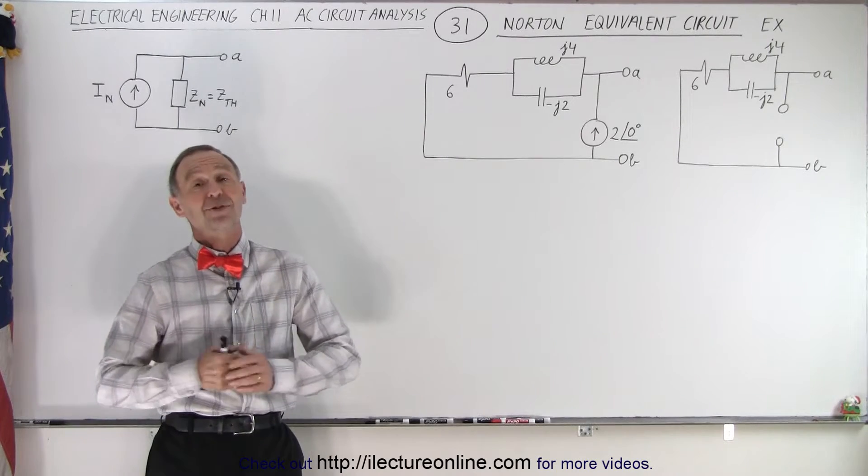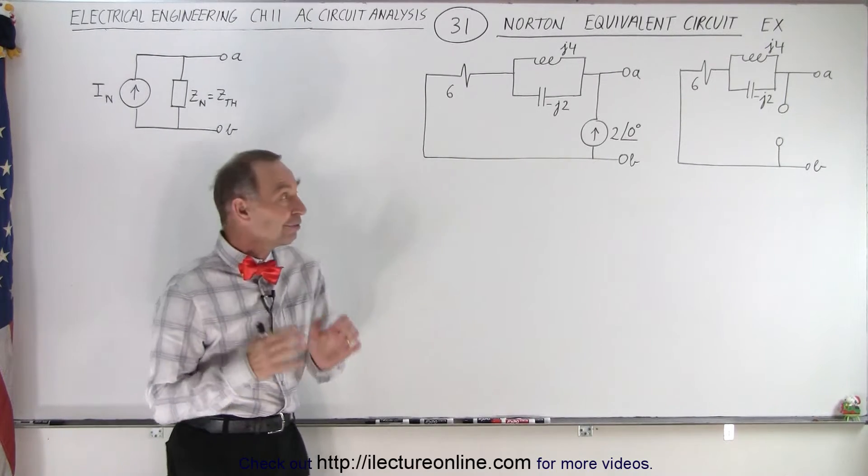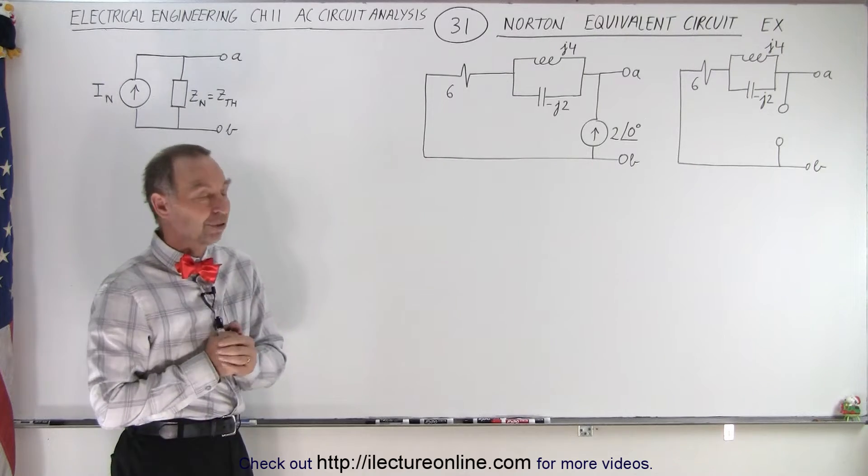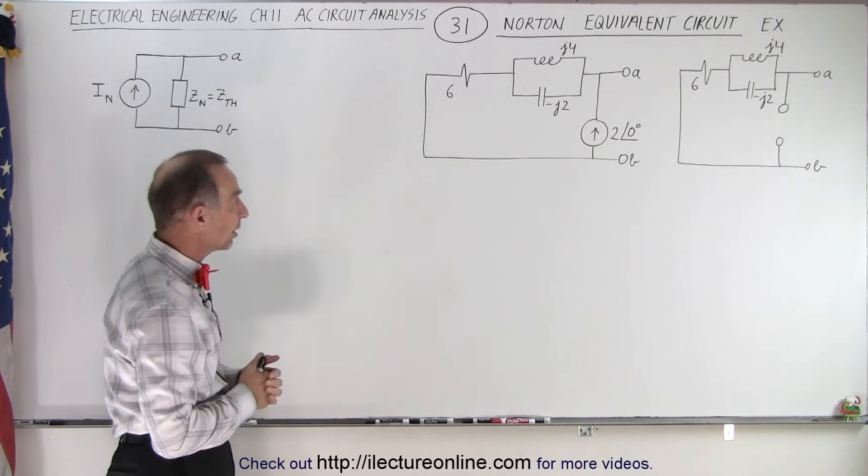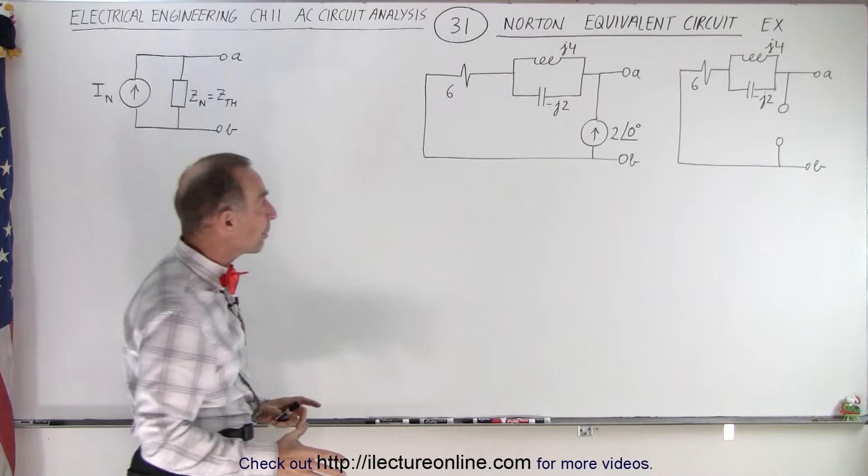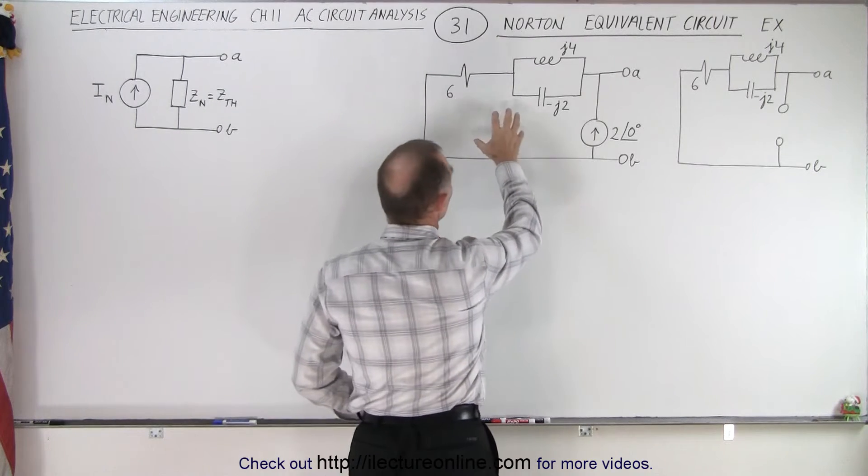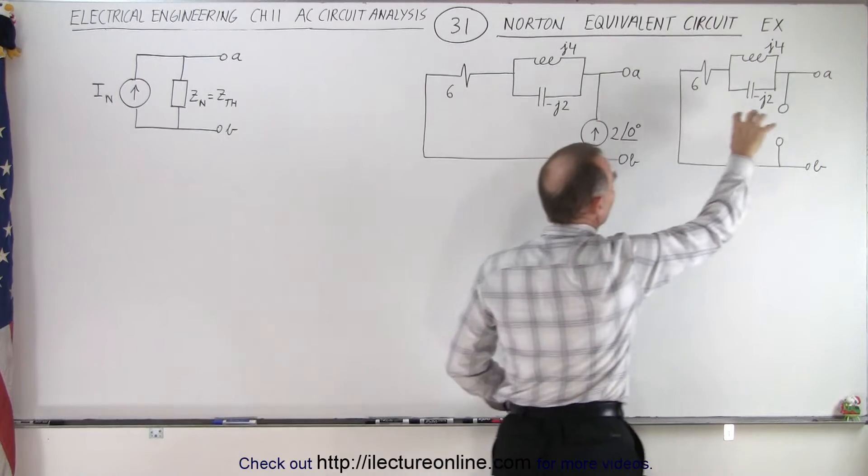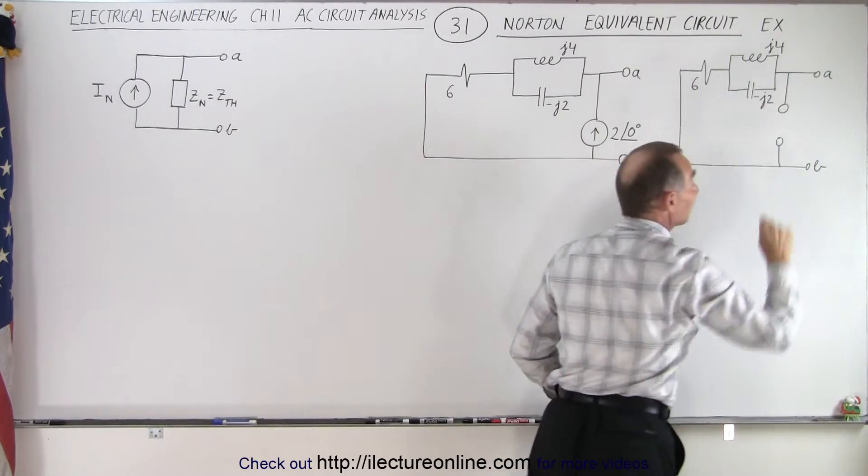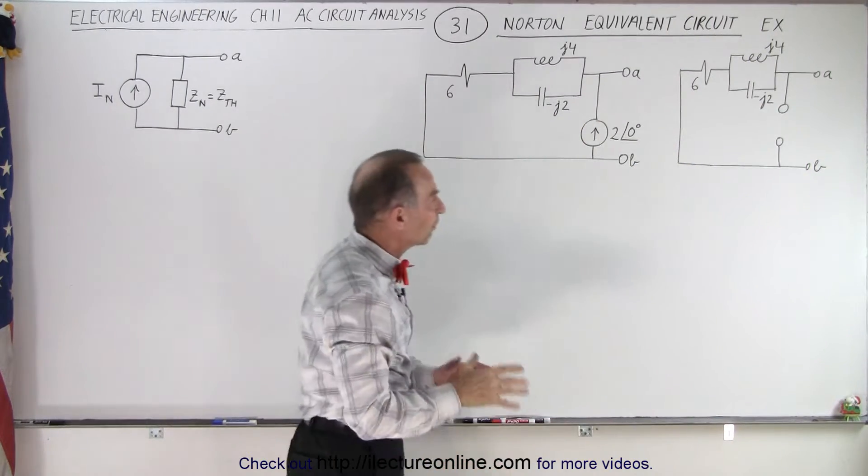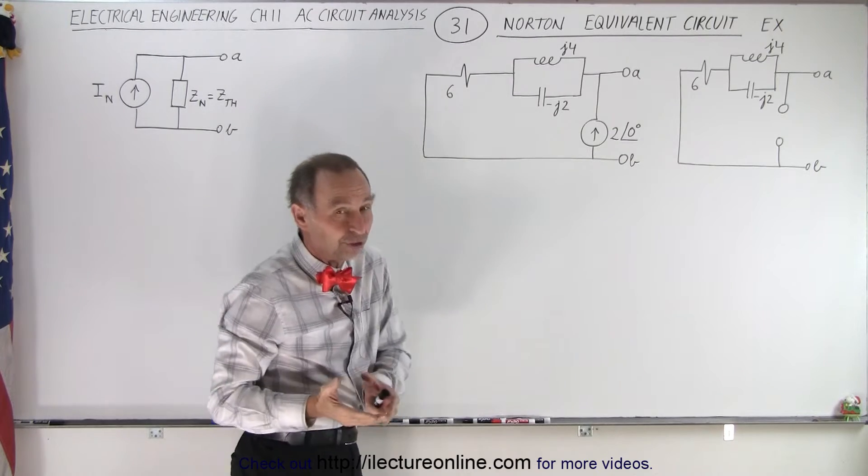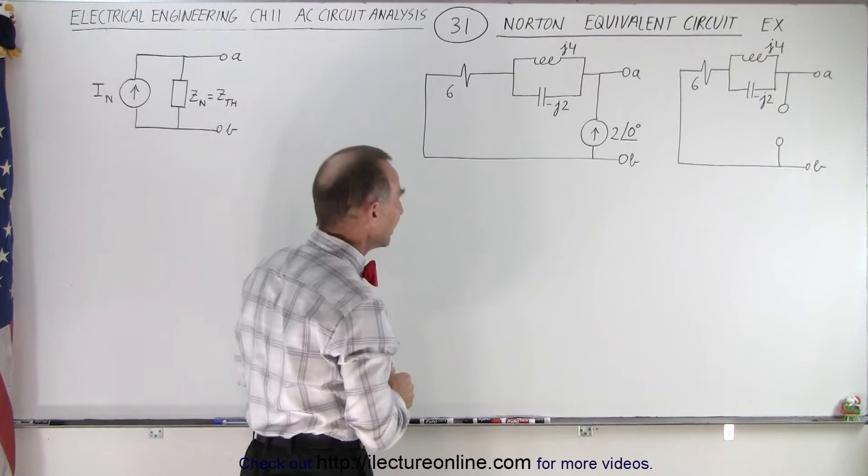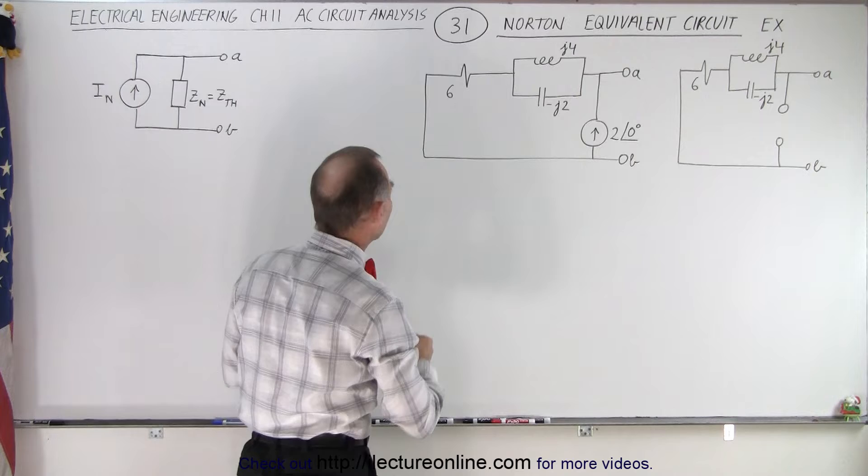Welcome to our lecture online. Now it's time to do an example of how to find the Norton equivalent circuit. Notice we've taken our original circuit, removed the current source, and made it into an open circuit so we can find the Thevenin equivalent impedance of the circuit, which is the same as the Norton equivalent impedance.